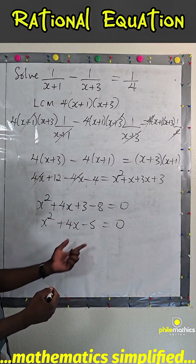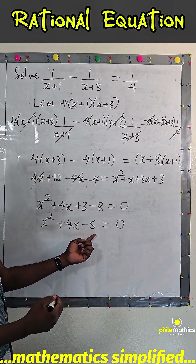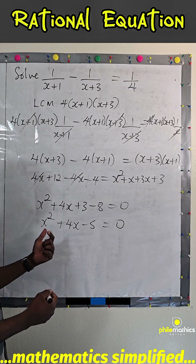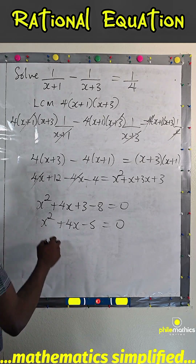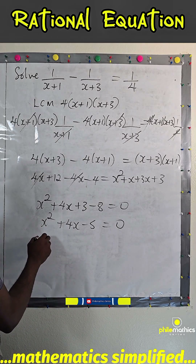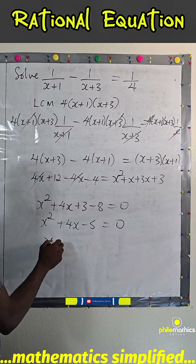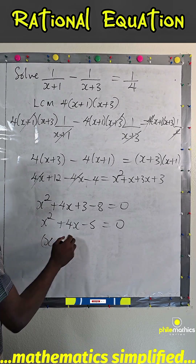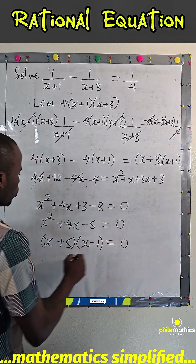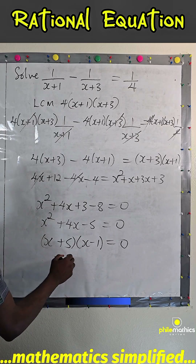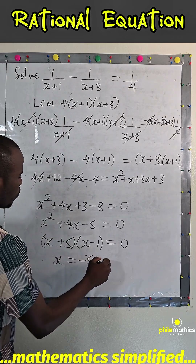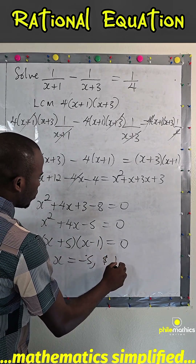Two numbers you multiply to get minus 5, and when you add, you get 4 — that will be 5 and minus 1. Since the coefficient here is 1, I can easily factor it. So (x+5)(x-1) equals 0, meaning x is minus 5 or x equals 1.